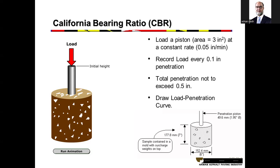Sometimes you have 1.5-inch material in a base layer, but we are not going to test 1.5-inch material directly. There is always a gradation for base material, and any material within that gradation that is No. 4 or finer will be used. For subbase, we may have 2.5-inch material, but we test only that portion passing No. 4 sieve. Coarse material is not used for CBR.